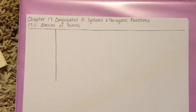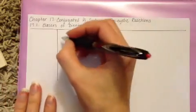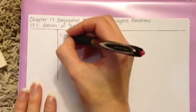In Chapter 17, we are going to be studying dienes, which are molecules that have two carbon-carbon double bonds.